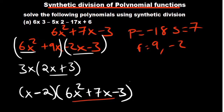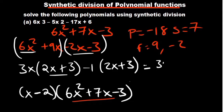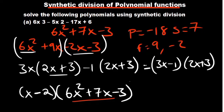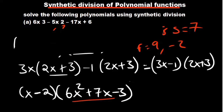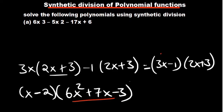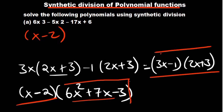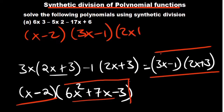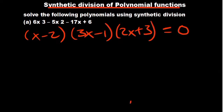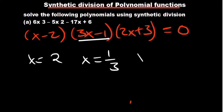So combining everything: factorizing the full expression gives us (x minus 2)(3x minus 1)(2x plus 3) equals 0. We expect 3 possible solutions since this is a cubic. Solving: x equals 2; from 3x minus 1 equals 0, x equals 1 over 3; and from 2x plus 3 equals 0, x equals negative 3 over 2. That answers the first question.